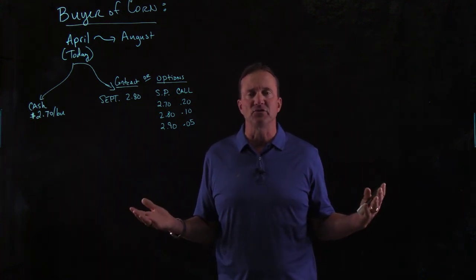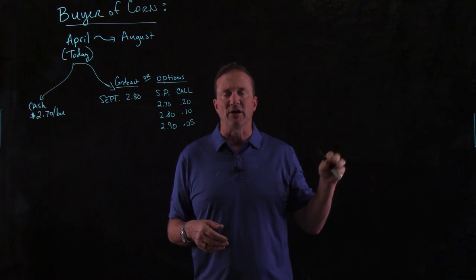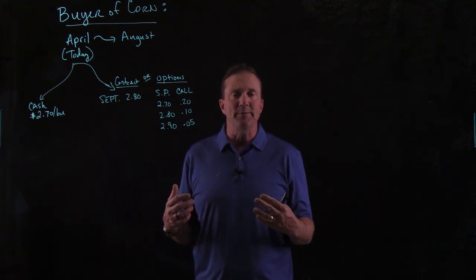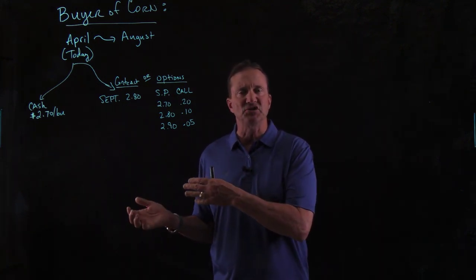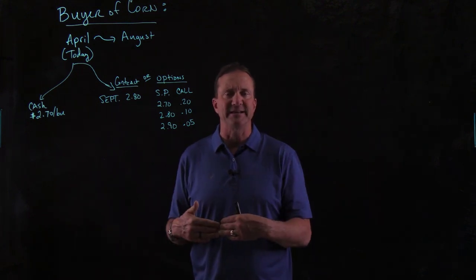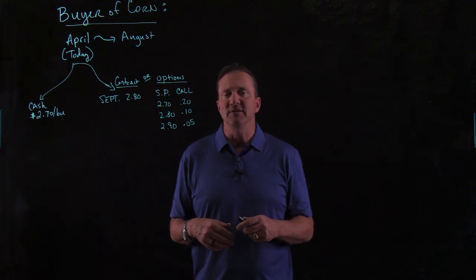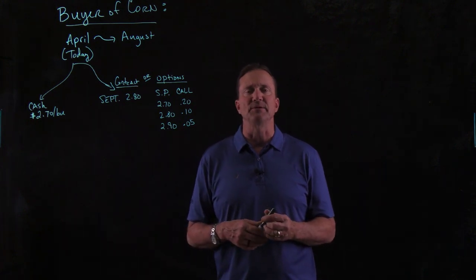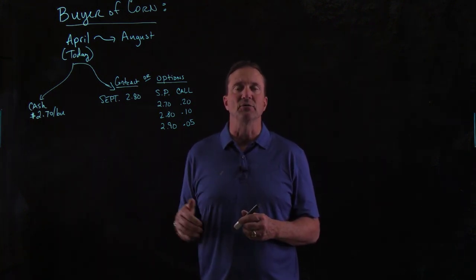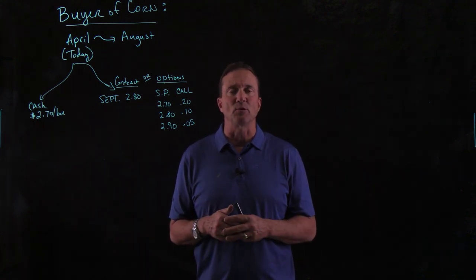We are selling feed to our customers, so if prices were to spike on us — in other words, if corn was to get really expensive — then we would have to turn around and change the cost of our feed to try to maintain some level of profit, and that might be a problem if our competitors did a better job of managing price risk. So options hedging or contract hedging are important tools.